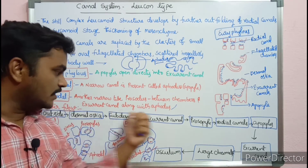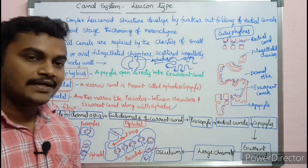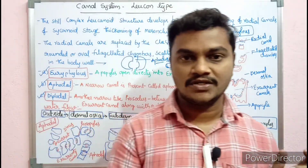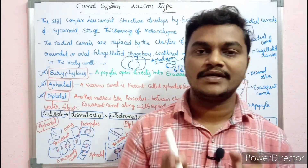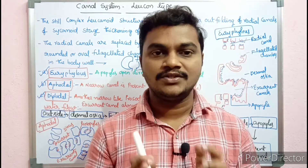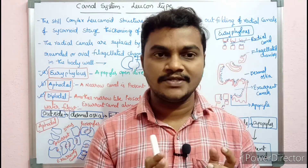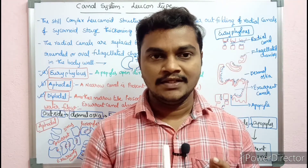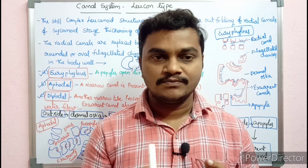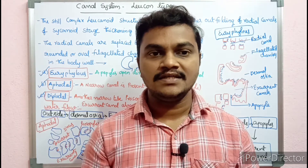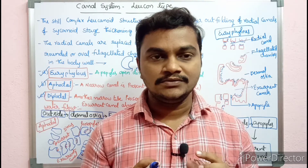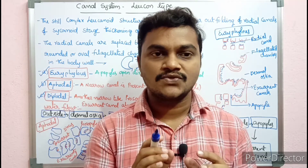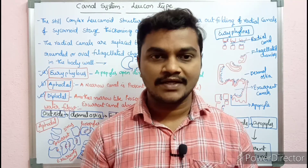This is the water flow for the Leuconoid type of canal system. It is all about the canal system which is present in sponges. Every type has its own pathway, but you can see different types of canal systems present.